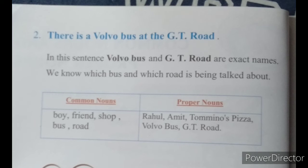In the given sentences, we learn that nouns like boy, friend, shop, bus, and road are common nouns, and nouns like Rahul, Amid, Tomino's pizza, Volvo bus, and GT road are proper nouns.